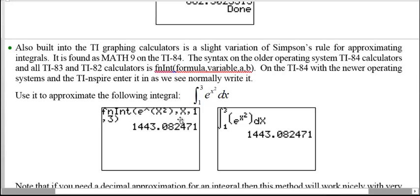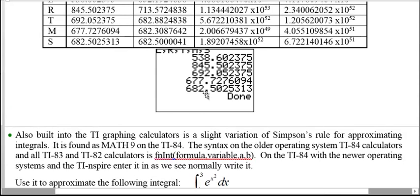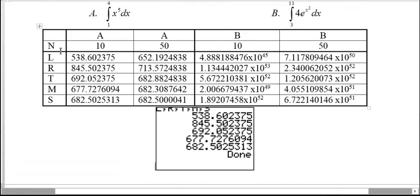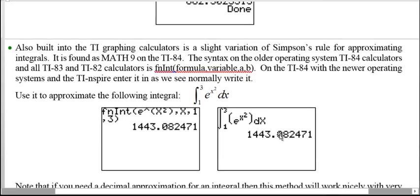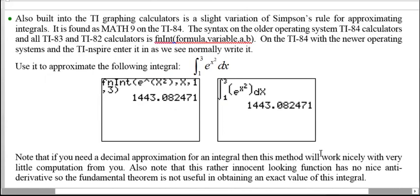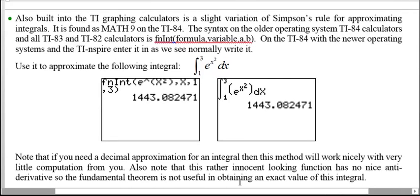So if you need a decimal approximation for a definite integral, this built-in function works very nicely and is very easy to use. If you want to see all five approximations — left, right, trapezoid, midpoint, and Simpson — use the calculator program. If you just need a final decimal answer, use the built-in function. Note that a function like e^(x²) has no antiderivative expressible in closed form, so numerical methods are essential — we'll cover that more in our next set of videos on the Fundamental Theorem of Calculus.